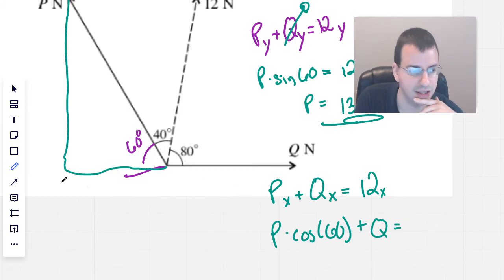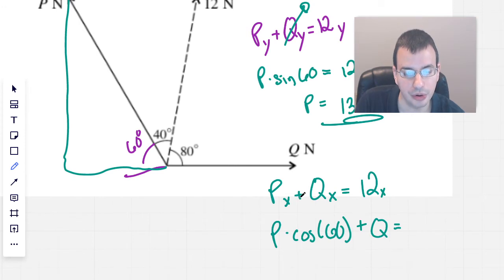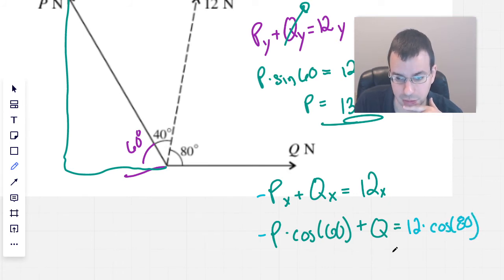And that will equal... wait a second, I think I should have a negative involved. Yep, I'm going to say negative P because it goes off on the left. So put a little negative right there, equals Q. I'm going to call this to the right positive, to the left negative. So then we'll do 12 times cosine of 80.